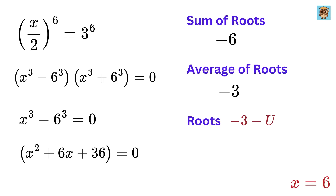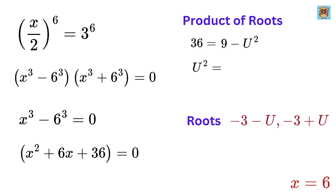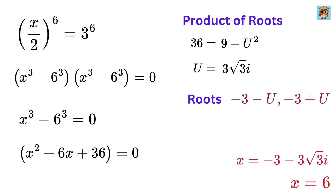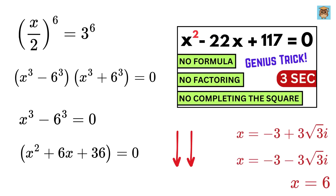The roots of this quadratic will be minus 3 minus u and minus 3 plus u. The product of the roots equals 36, which also equals minus 3 squared minus u squared. This becomes 9 minus u squared equals 36, so u squared equals 9 minus 36, or minus 27. Therefore u equals the square root of 27 times minus 1, which is 3 root 3 times i, the imaginary number. The roots of this equation are minus 3 minus 3√3·i and minus 3 plus 3√3·i. If you're wondering how I solved this quadratic, I have made a video for that — the link is in the description. Go check it out, but only after completing this video.